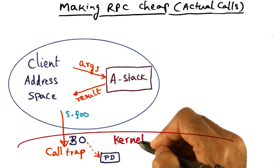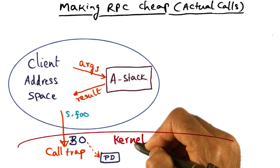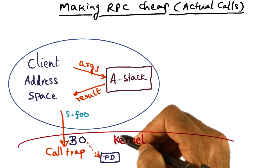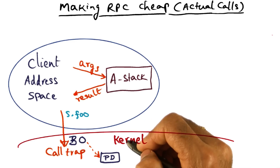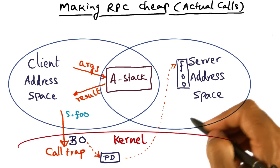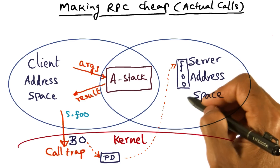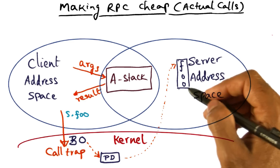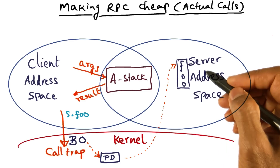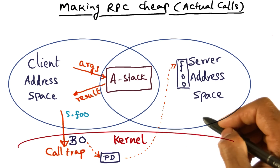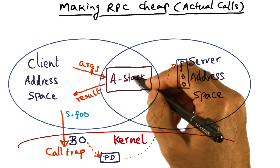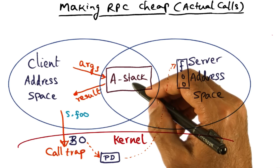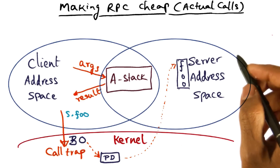Once the kernel has doctored this client thread to start executing the server procedure, it can transfer control to the server. Now we're starting to execute the server procedure in the server's address space. And in the server's address space, because a stack has been mapped in, this is also available to the server domain.